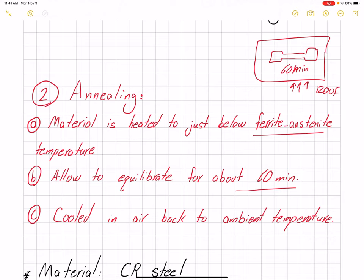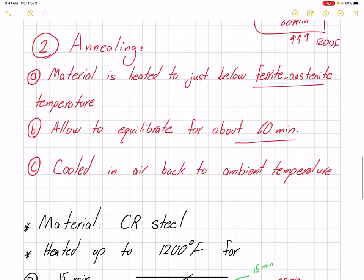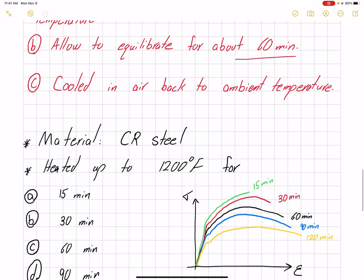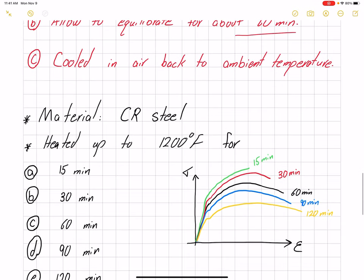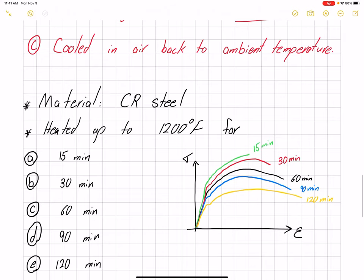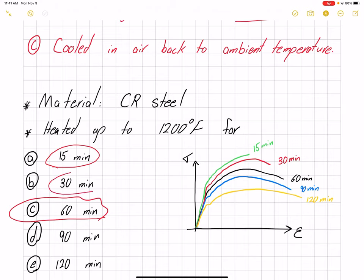For cooling in heat treatment there are different options — we can quench in water or oil — but for annealing it is very important to cool at room temperature in air. The material we are going to use is cold rolled steel because it has already been strain hardened, and now we can anneal it to remove the strain hardening effect. We will heat it to 1200 Fahrenheit and keep it there for different time periods: 15 minutes, 30 minutes, 60 minutes, 90 minutes, and 120 minutes to see how the effect changes over time.